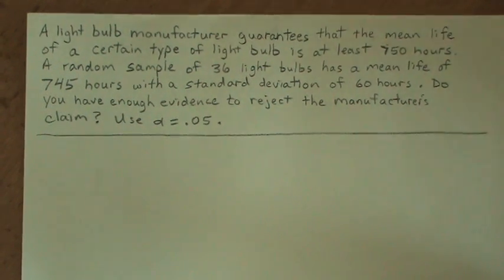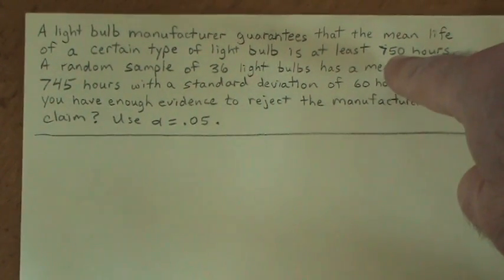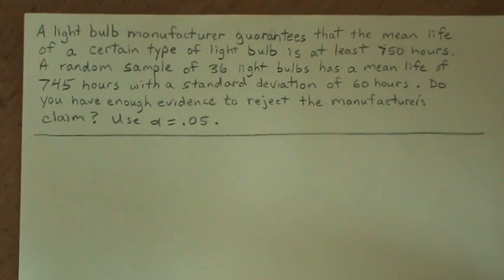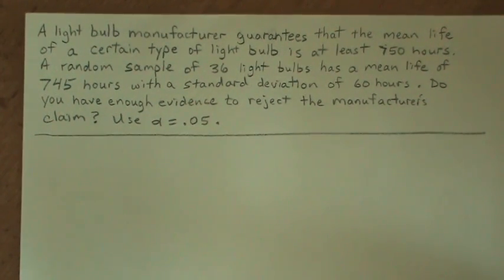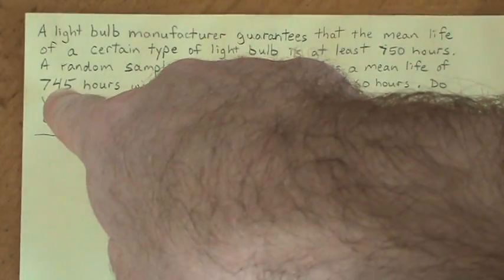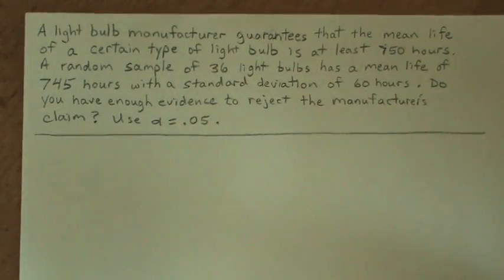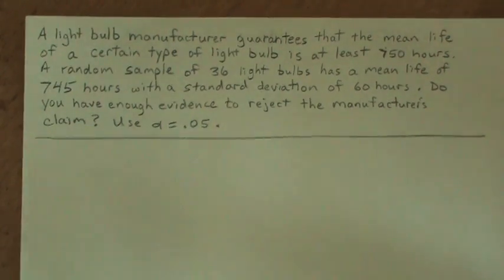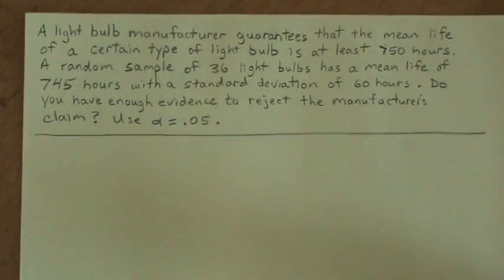The question is, is it very likely that if it's true that you actually could get 750 hours or more on average out of your light bulb, is it very likely that you could just randomly take 36 light bulbs and happen to get such a low mean life? Well, we're going to find out by testing this company's claim.